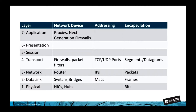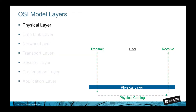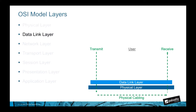We can also see how the traffic is encapsulated or bundled up for delivery by the different layers. The physical layer, or layer one, is responsible for the transfer of digital bits from the source to the destination. Fiber and copper cable are examples of layer one technologies. Layer one devices include things like NIC cards, hubs, and repeaters. Layer one traffic is delivered as bits, or ones and zeros.